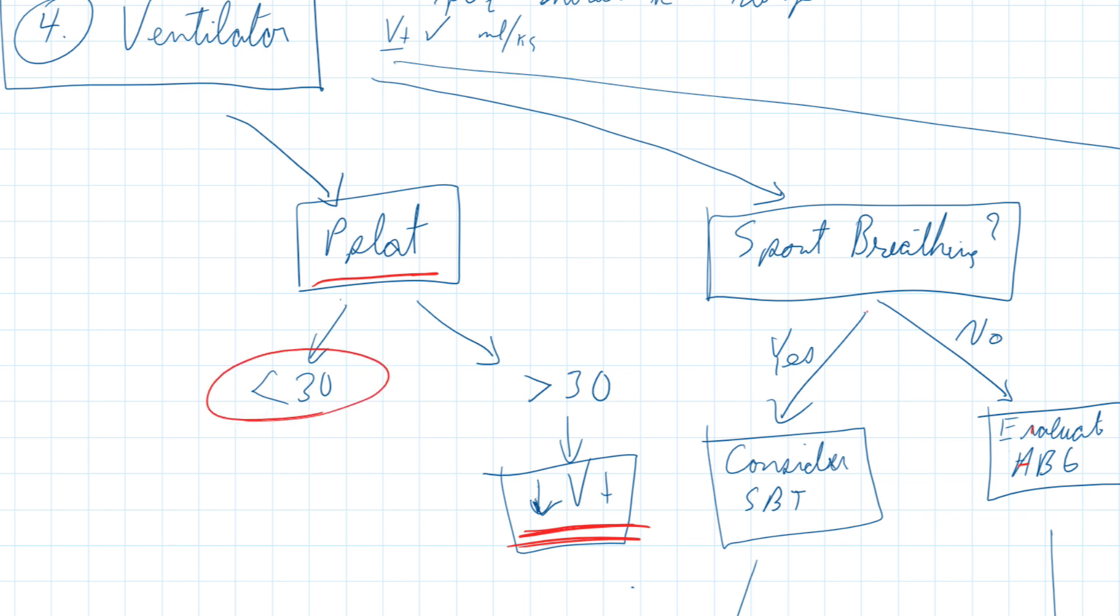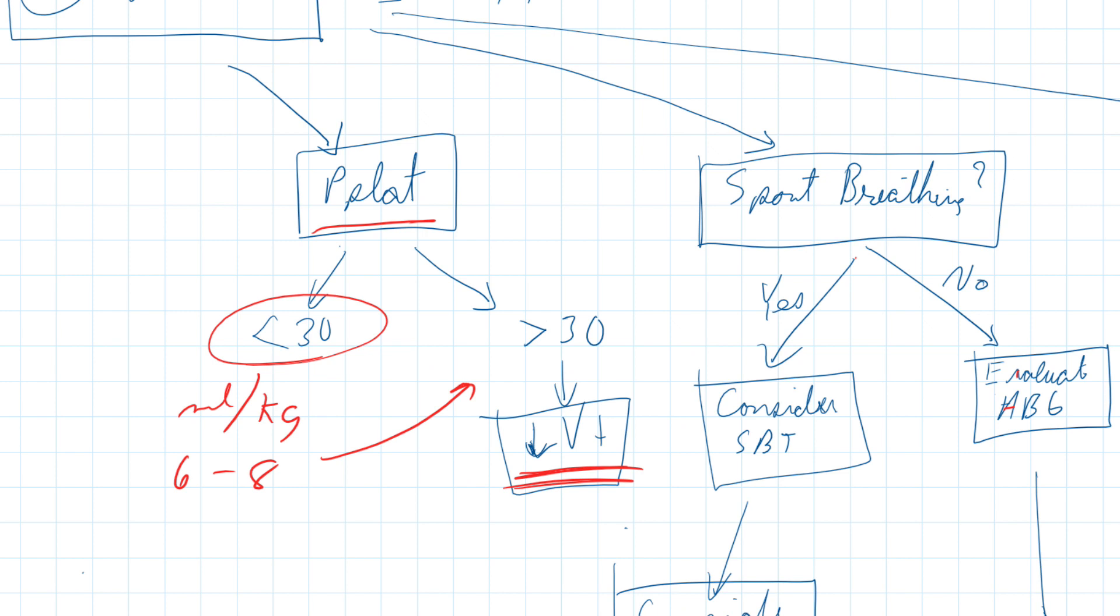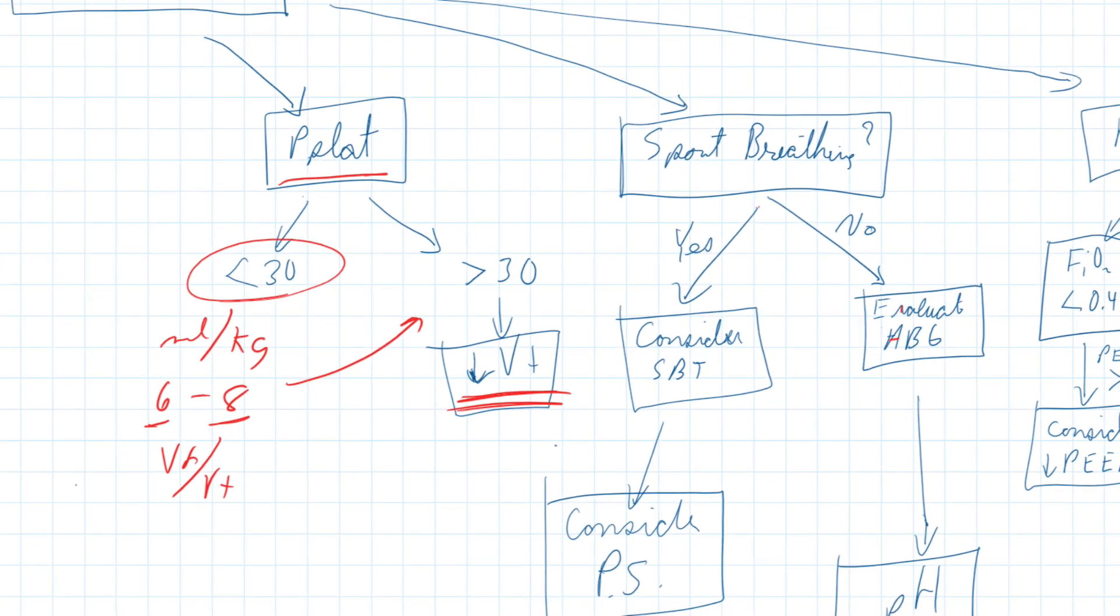And that's usually targeting that 6 to 8. If it's greater than that, I might turn it down. If it's less than that, I might turn it up, provided that I'm preventing that P-plats from getting above 30 centimeters of water pressure. My goal is to get that 6 to 8 in there because that helps with my VD-VT, which is the dead space. So those are guidelines. Give me some indications of what I might be thinking about. You know, I haven't made a decision yet.